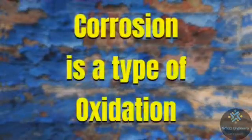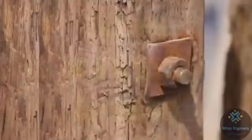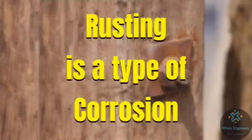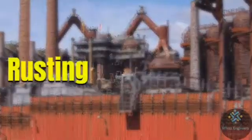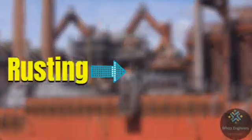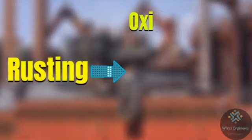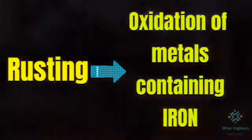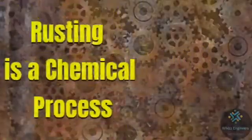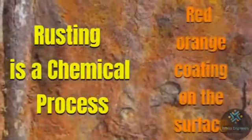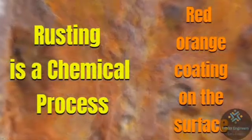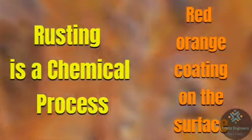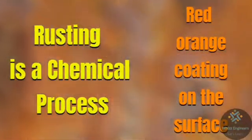Therefore, corrosion is a type of oxidation and rusting is a type of corrosion, although it specifically refers to the oxidation of metals containing iron. Rusting is a chemical process of forming a red-orange coating on the surface of iron or steel.